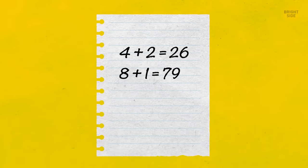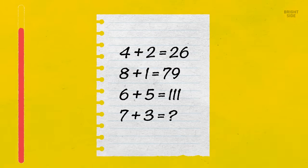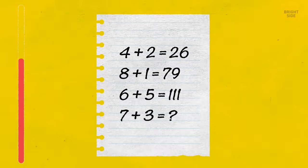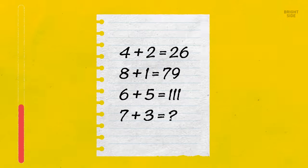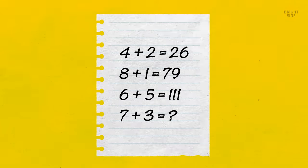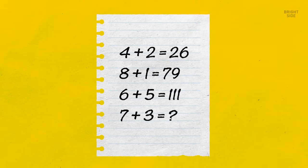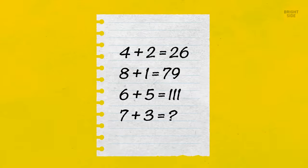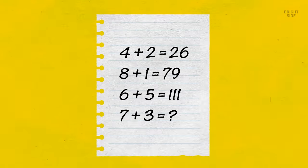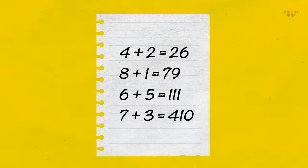Can you find the pattern and figure out the answer to this equation? 4 plus 2 equals 26. 8 plus 1 equals 79. 6 plus 5 equals 111. 7 plus 3. 4 plus 2 equals 26 since 4 minus 2 equals 2, and 4 plus 2 equals 6. 8 minus 1 equals 7, and 8 plus 1 equals 9, and so on. 7 minus 3 equals 4, and 7 plus 3 equals 10. It means the answer will be 410.